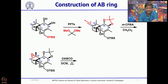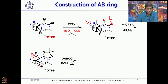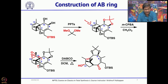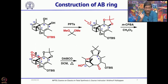At this stage he tried the fragmentation reaction. Using a non-nucleophilic base DABCO and heat, the rearrangement or fragmentation took place smoothly to give the AB ring of Taxol. If you look at this, this is the AB ring of Taxol and it has almost all the functionalities present in the A and B rings.